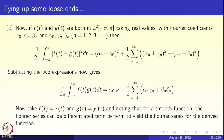We write the Parseval formula for both f + g and f − g: (1/2π)∫|f ± g|² dt = (α₀ ± γ₀)² + (1/2)Σ[(αₙ ± γₙ)² + (βₙ ± δₙ)²]. Subtracting, we obtain: (1/2π)∫f(t)g(t) dt = α₀γ₀ + (1/2)Σ(αₙγₙ + βₙδₙ).